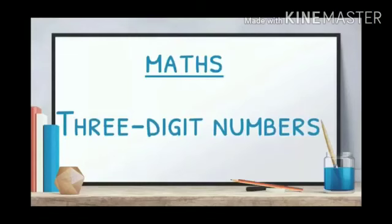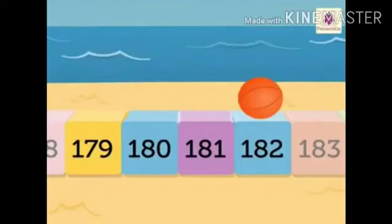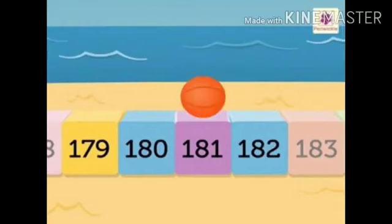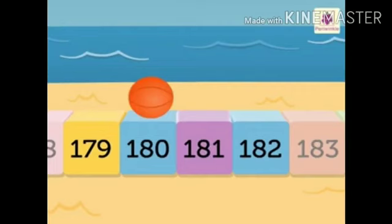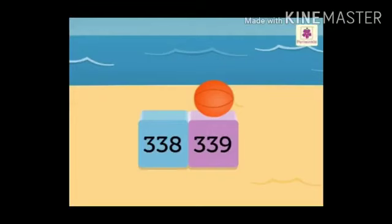Now let's take the examples of 3-digit numbers. Now the bowl is on the number 182. What comes before 182? Here comes the bowl on 181 — so 181 comes before 182, and 180 comes before 181. Now the bowl is on number 339. What comes before 339? Yes, the number before 339 is 338.